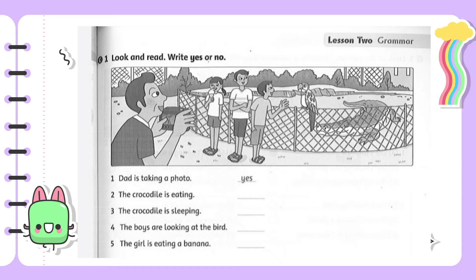For example, sentence one: 'Does he taking a photo?' — is he taking a photo? Yes, he is taking a photo, so write 'yes'. Number two: 'The crocodile is eating.' — is the crocodile eating? No, it is not, so write 'no'.